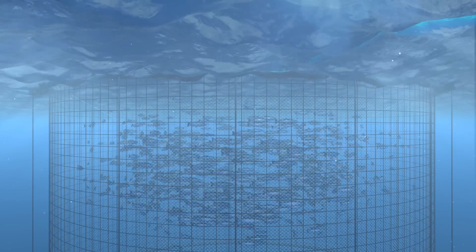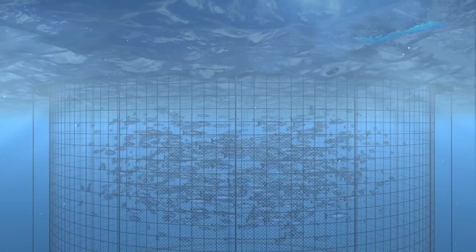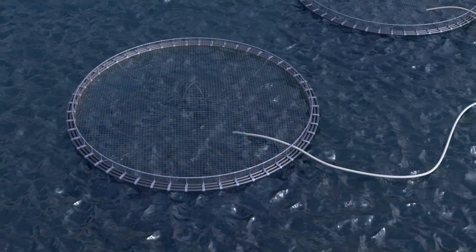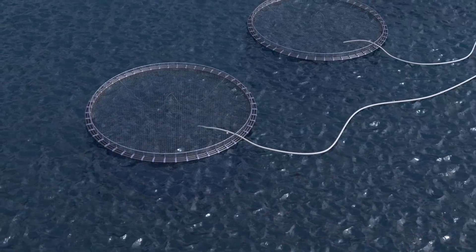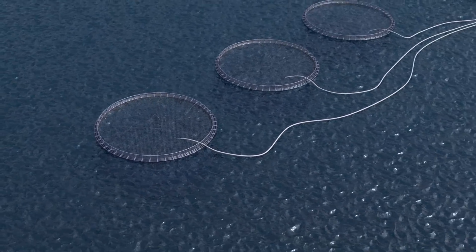It's also possible to grow other species around the net pens, like mussels or seaweeds, that can filter or absorb some of the wastes produced by the fish in the net pens.